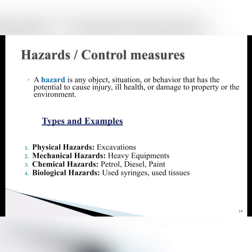Now we will discuss hazards and their control measures. A hazard can be defined as any object, situation, or behavior that has the potential to cause injury, ill health, or damage to property or the environment. Types and examples of hazards: firstly, physical hazards such as excavations; secondly, mechanical hazards; thirdly, chemical hazards such as petrol, diesel, and paint; and last, biological hazards which include used syringes and used tissues.